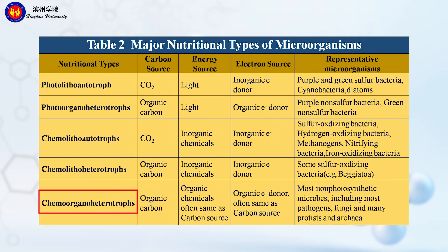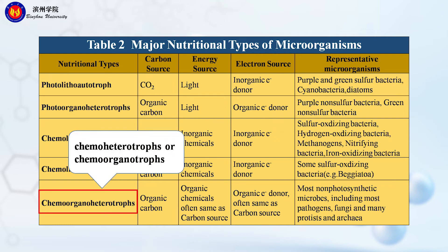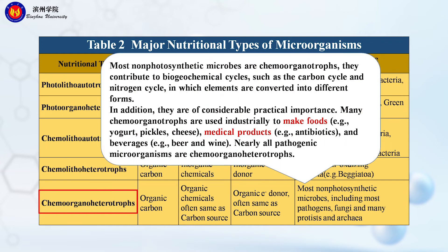The third type is chemo-organoheterotrophs. Organic carbon serves as their carbon source, electron source, and energy source. Most non-photosynthetic microbes are chemo-organotrophs. They contribute to biogeochemical cycles such as the carbon cycle and nitrogen cycle, in which elements are converted into different forms.